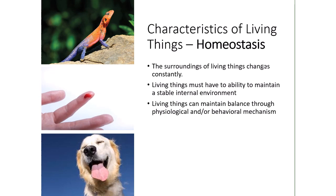The second characteristic of living things is the ability to maintain homeostasis — maintaining an internal balance. The environment around us changes constantly: it gets cold, it gets hot. For a fish living in the ocean, salinity might change, pH might change. We must be able to maintain some kind of internal balance despite these changes, and that ability is a characteristic of living things called homeostasis.